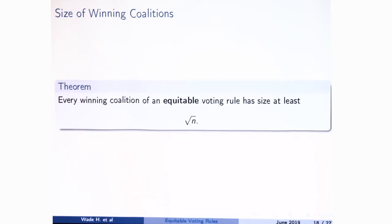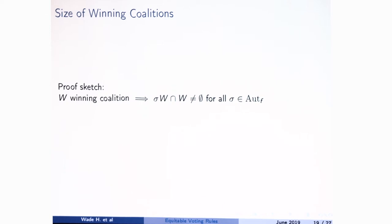What happens when you replace anonymity with equitability is that 'half' goes to √n instead — which is pretty cool. Suppose we have a voting rule and W is a winning coalition. The most important thing is that if I act by any automorphism of the voting rule, my new set should also be a winning coalition. So it needs to intersect W, because if it didn't, I could have two winning coalitions that disagree — and that's the key feature.